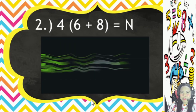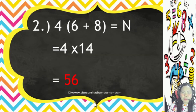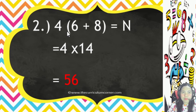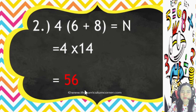Number 2: we solve inside the parentheses first. 6 plus 8 equals 14, then multiply by 4. Notice there is no explicit sign between 4 and the parenthesis — that means we multiply. So 4 times 14 equals 56.